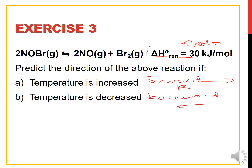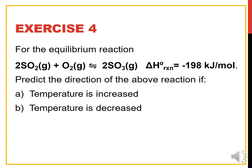If the temperature is decreased, the reaction goes in the backward direction. Similarly, for Exercise 4, the ΔH has a negative sign, so it is exothermic. If temperature is increased, the reaction goes backward, shifting to the left. If temperature is decreased, it goes forward.